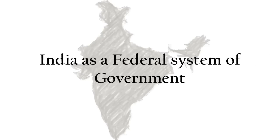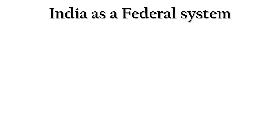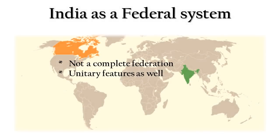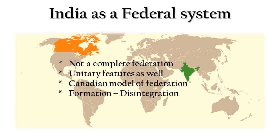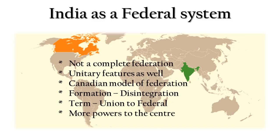Now we will see how India satisfies the federal features of government. India has a federal system, and though it satisfies almost all the features, we don't call it a federation because it also has some unitary features. India follows the Canadian model of federation — formed through disintegration, meaning the whole of India is divided into separate states, not the states uniting to form India. India uses the term 'union' rather than 'federal,' and more powers are given to the center.